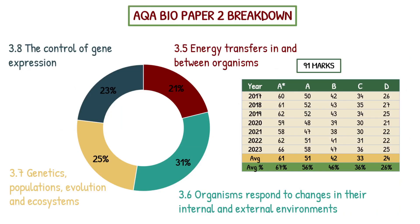This is a topic breakdown — and then we'll look at the subtopics — because it can be kind of misleading in terms of where you want to focus your revision. As we can see here, this is a breakdown of the percentage of marks allocated to each topic across the 7 papers from 2017 to 2023. The highest off the bat is 3.6 at 31%, then 3.7 — genetics, populations, evolution, and ecosystems — at 25%, and then it drops down further. I'm going to explain briefly why looking at an overall topic is not as insightful as looking at the subtopics.